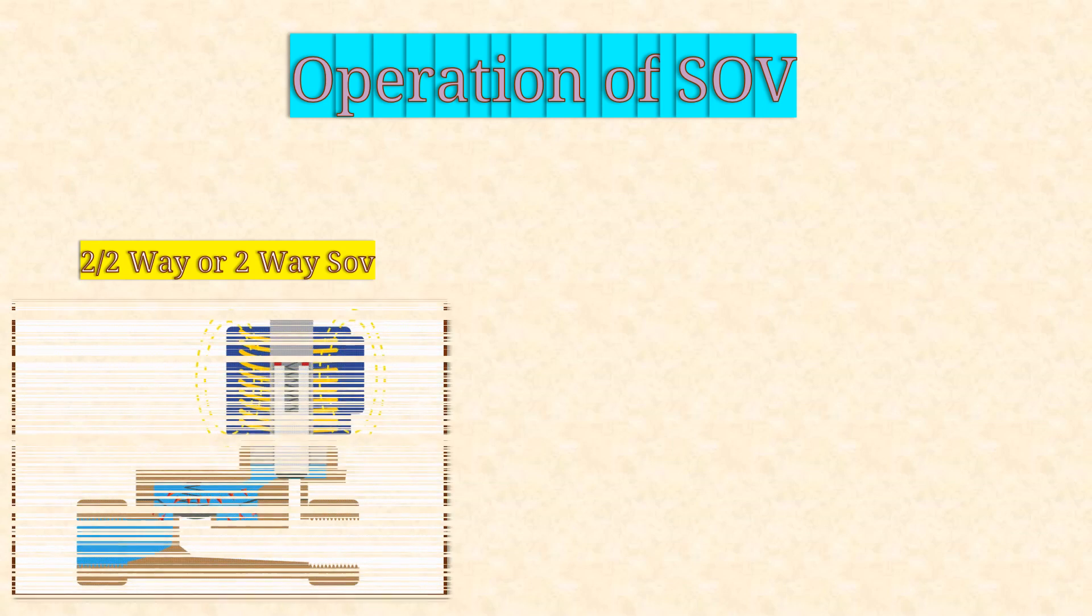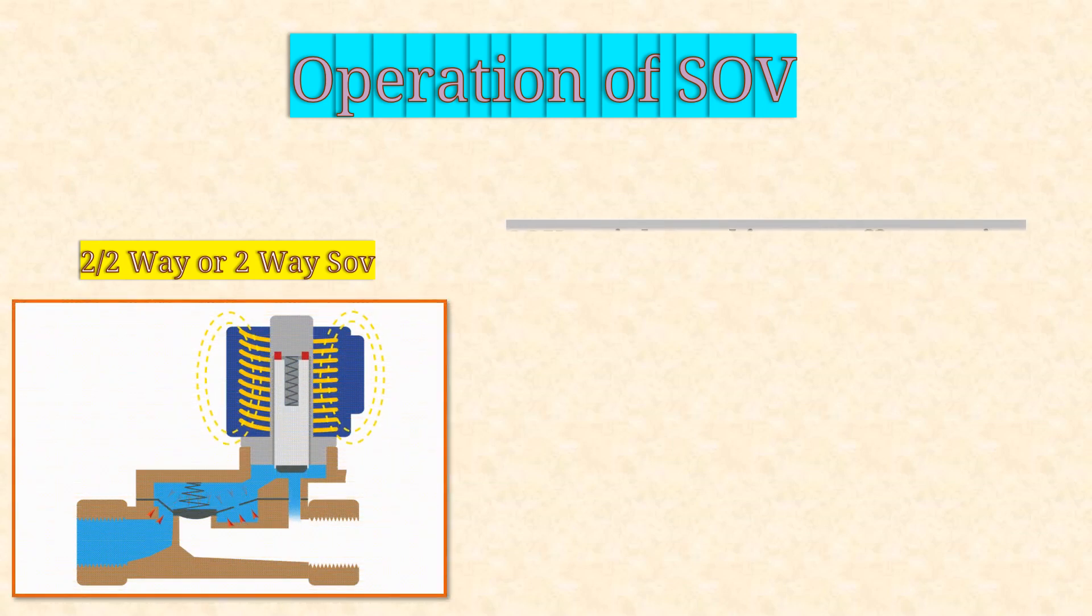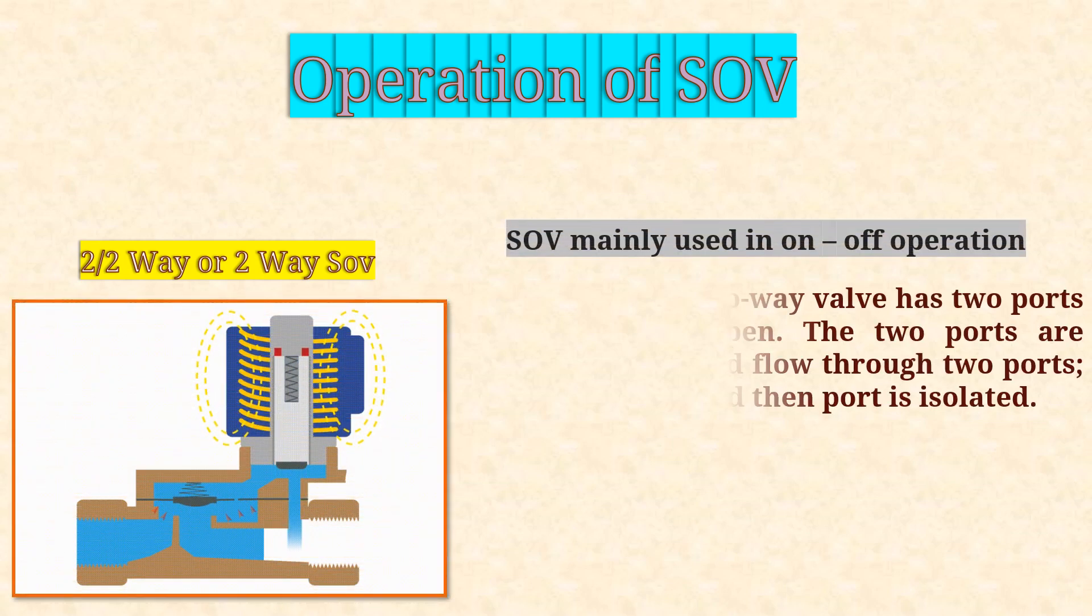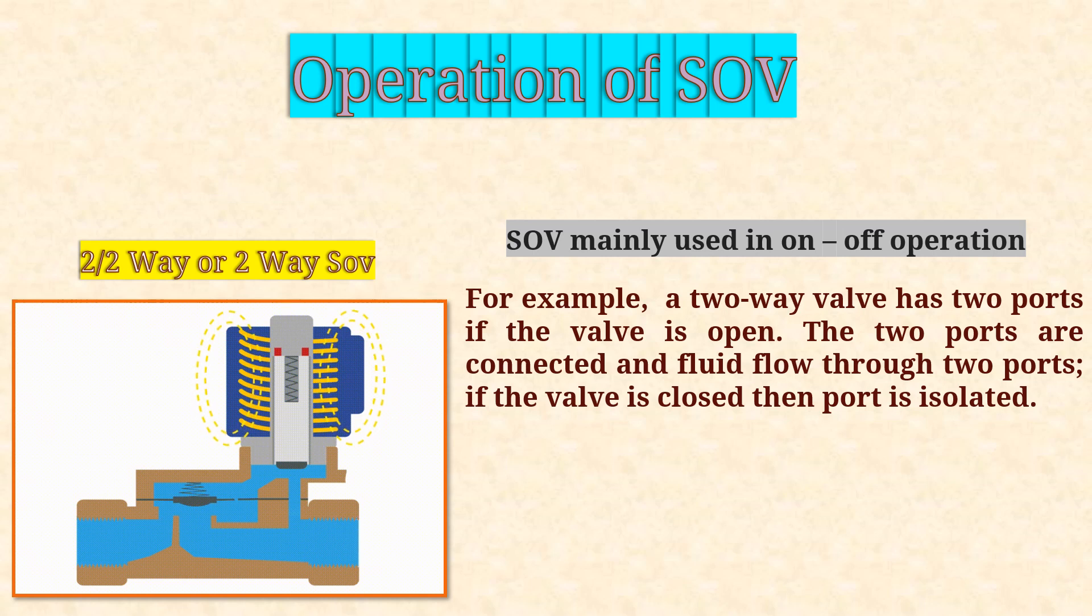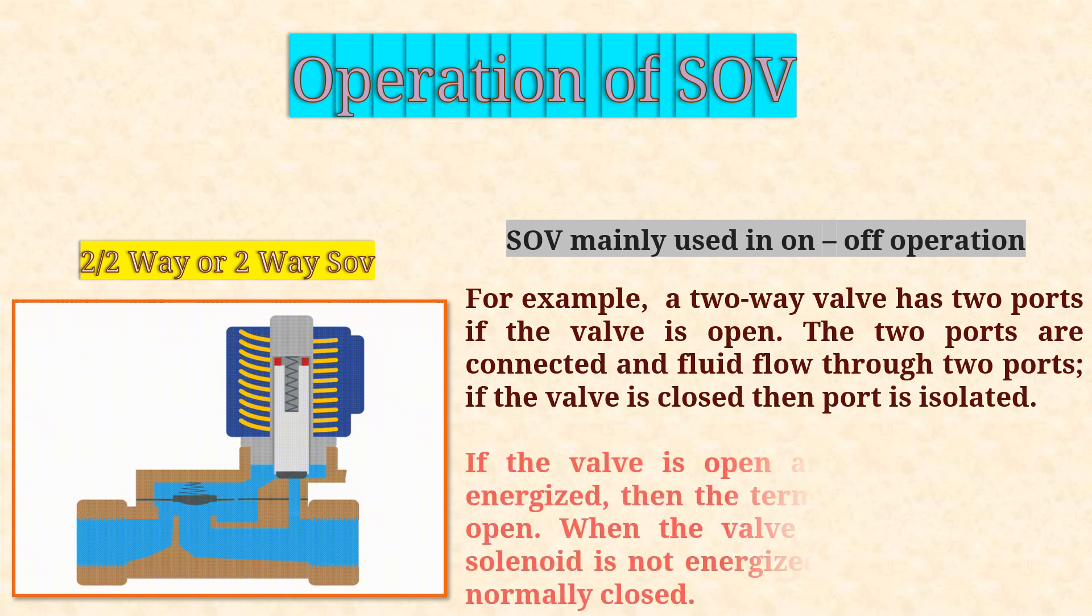Let's see operation of solenoid operated valves. We will start with 2 by 2, or we can say 2-way valve. Solenoid valve is mainly used in switching on-off operation. For example, a 2-way valve has 2 ports. If the valve is open, the 2 ports are connected and fluid flows through 2 ports. If the valve is closed, then the port is isolated.